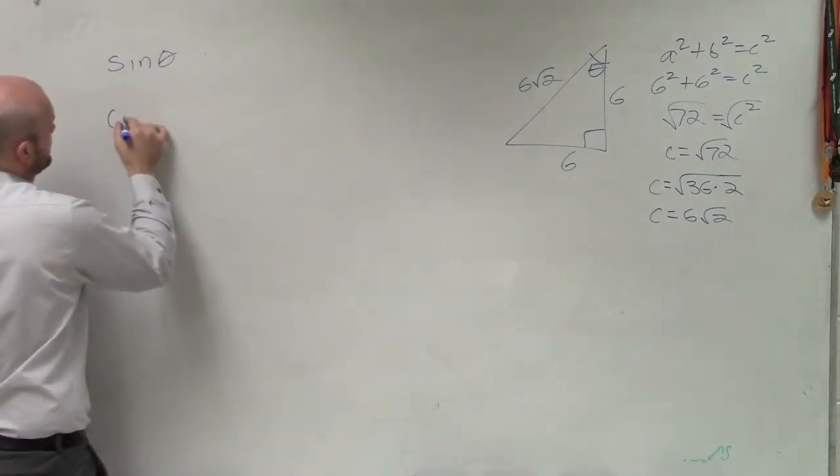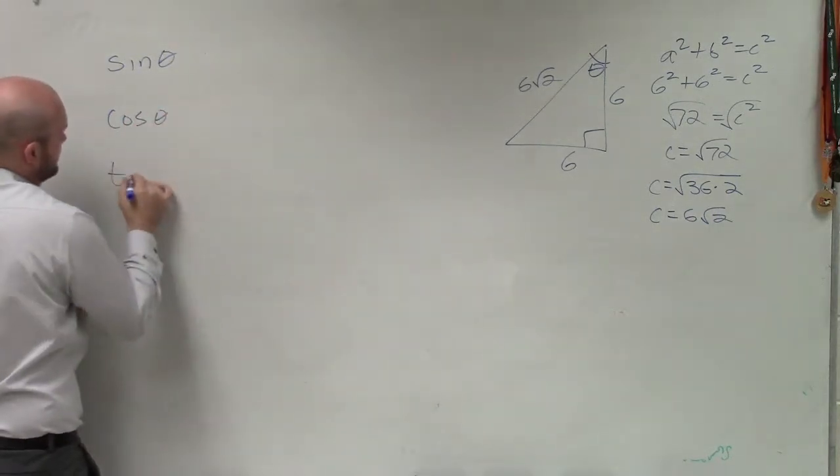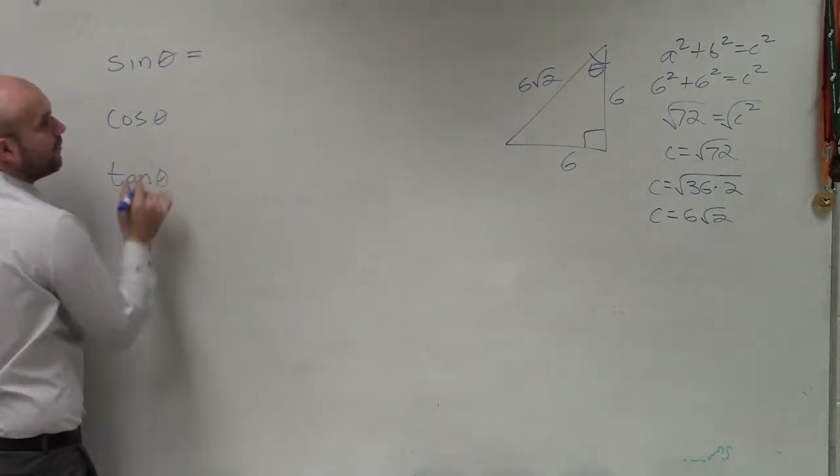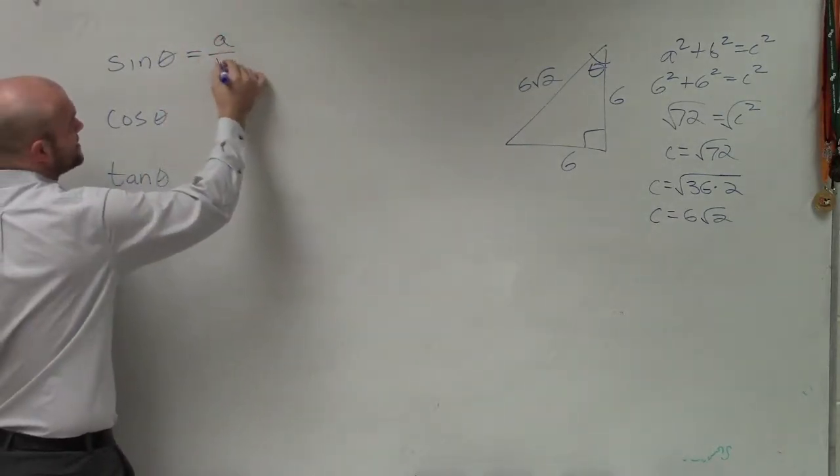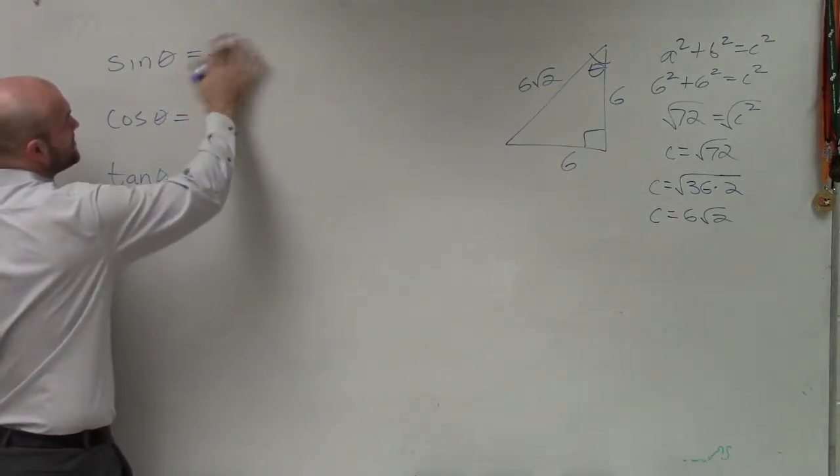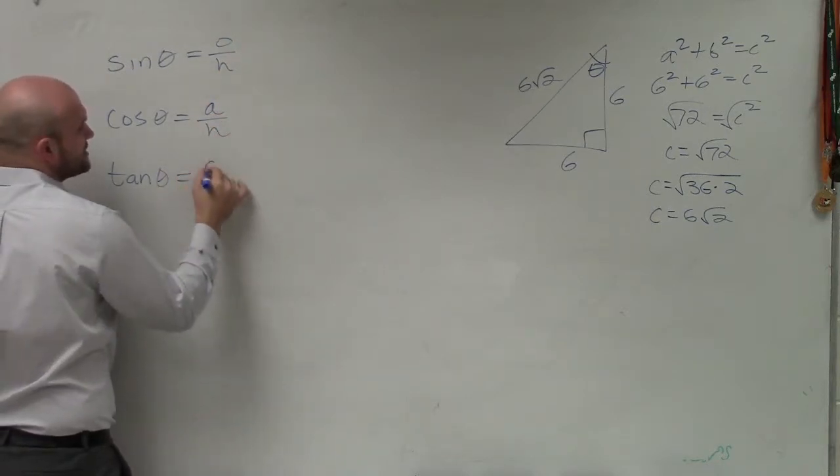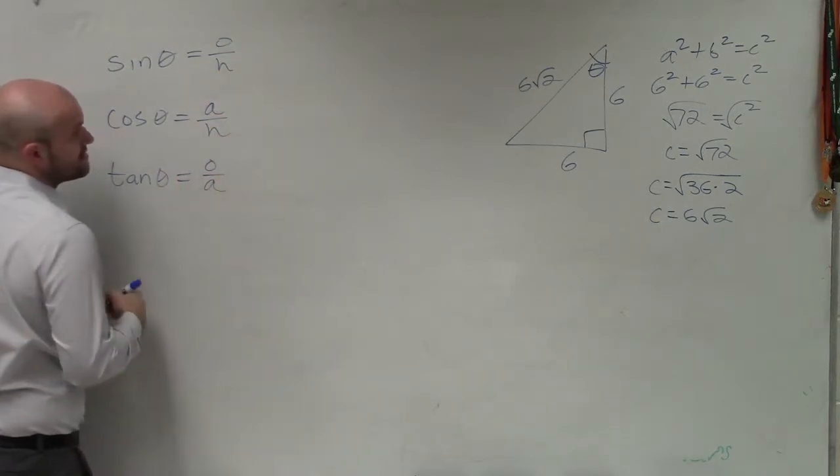So we have sine of theta, cosine of theta, and tangent of theta. Let's do the first three trigonometric functions. So instead of being the y-coordinate, now it's going to be your opposite over your hypotenuse. Cosine is adjacent over hypotenuse. And your tangent is opposite over adjacent.